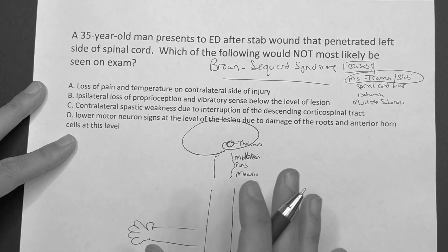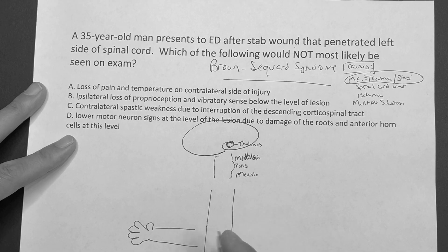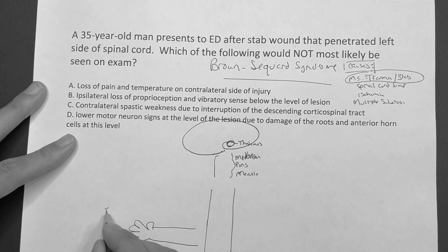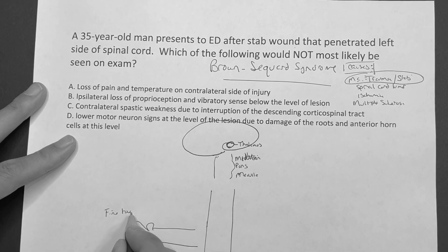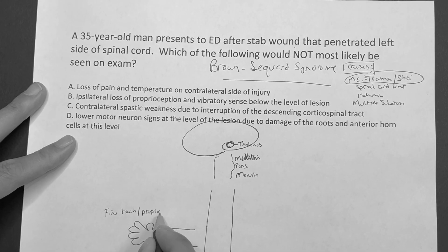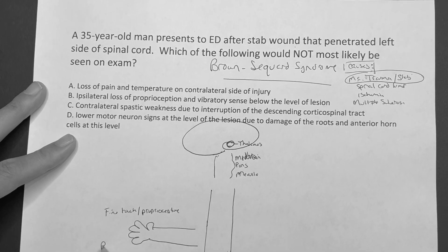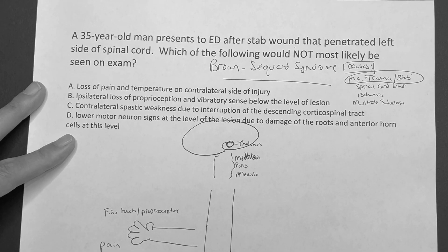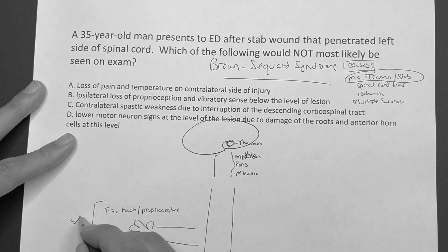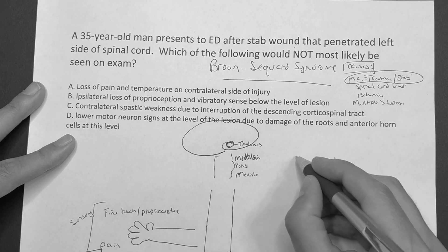There are really only three things you have to make sense of: fine touch and proprioception, pain — those are all sensory — and then the motor component. And that's basically it. All they're going to test you on is: on the same side as the injury, what does it look like? And on the opposite side, what does it look like?